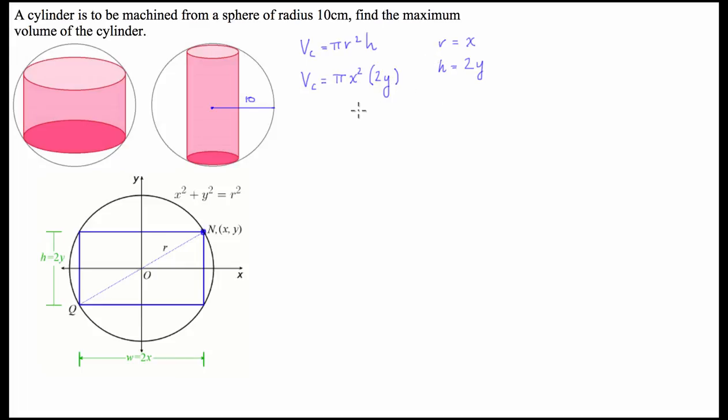Now, we also have a formula which is going to act as a boundary on which our cylinder is able to be optimized inside of. Now, the sphere, we're going to use its cross-section again, and we're going to have the equation for a circle.